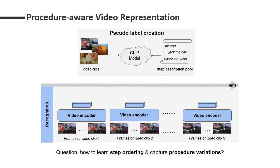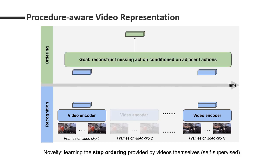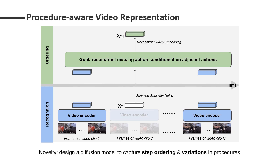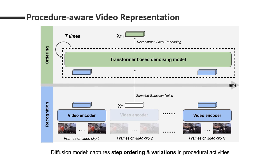Beyond individual action steps, the question is how to learn step ordering and capture their variations. Our solution is to design a model to reconstruct the missing actions conditioned on the surrounding video clips. Such ordering is provided by the videos themselves. More specifically, we design a diffusion model to reconstruct the missing video embedding from the sampled Gaussian noise. Our diffusion model not only learns the step ordering, but also captures the variations in task procedures.